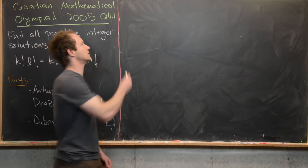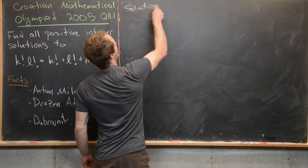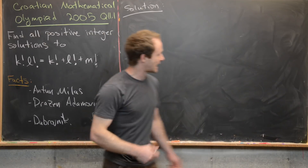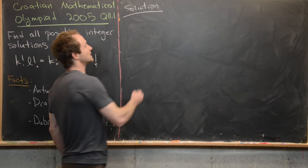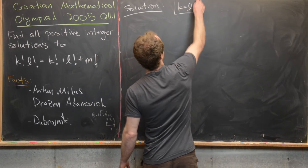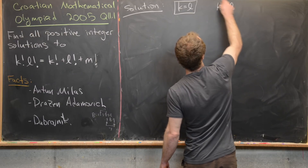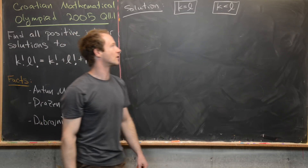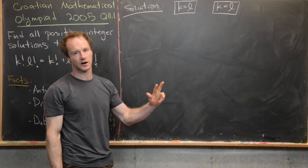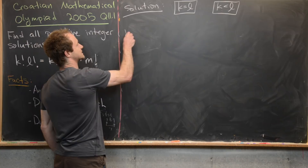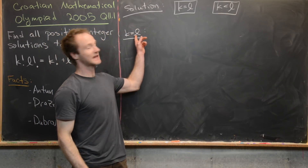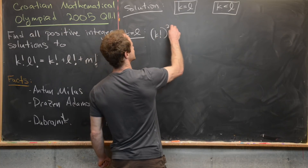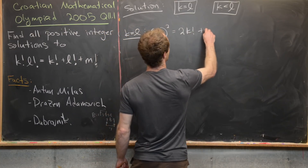Now we're ready to look at a solution. Notice that k and l play a symmetric role, so we can consider them interchangeable. We'll break this into two cases: when k equals l, and when k is strictly less than l. Let's first look at the case when k equals l. When k equals l, our equation collapses to (k!)² = 2·k! + m!.